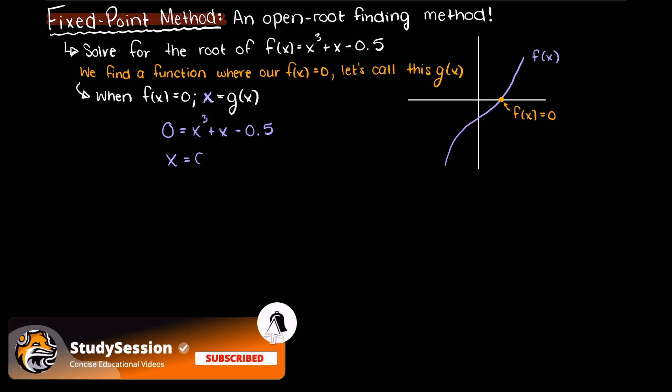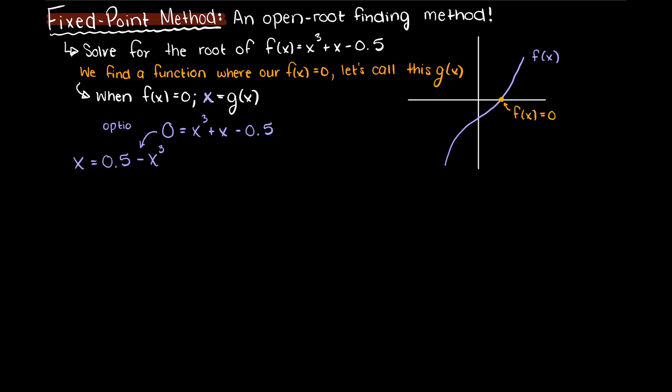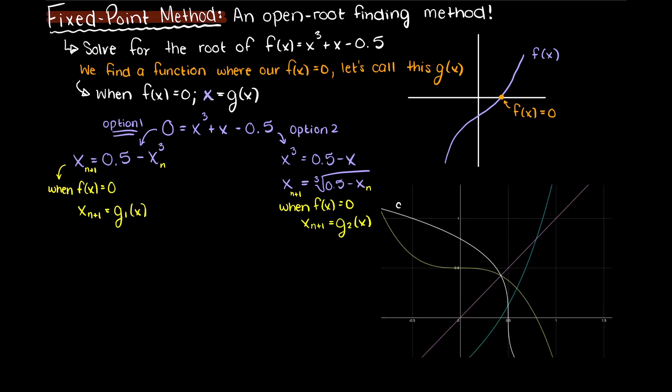So in our example here we'll set our functions to 0 and solve for our next iteration of x. These are two ways that you could go about doing it in this problem. I'm just going to call them g1 and g2. Let's just go ahead and plot them both on our graph here.